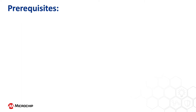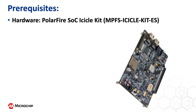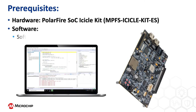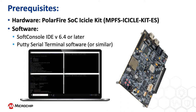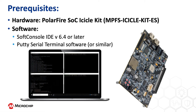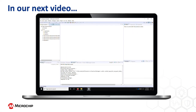To run this demo, you will need the PolarFire SOC Icicle Kit hardware, SoftConsole development environment version 6.4 or later. The download link for that is available in the video description below. You will also need a serial terminal software such as PuTTY or TeraTerm. We are going to use the PuTTY serial terminal software on a Windows 10 PC for this demo. Those are all the requirements you will need to get started.